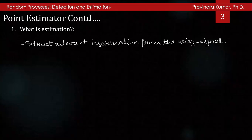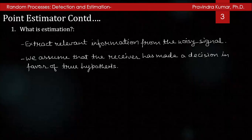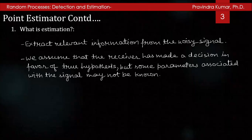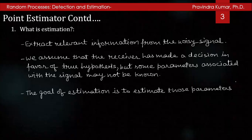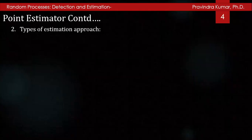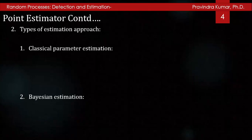In estimation, we assume that the receiver has made a decision in favor of one of two hypotheses, but some parameters associated with the signal may not be known. The goal of estimation is to estimate those parameters in an optimal fashion based on a finite number of samples of the signal. The estimation methods can be divided into two groups: classical parameter estimation and Bayesian estimation.